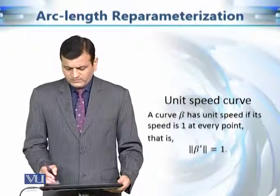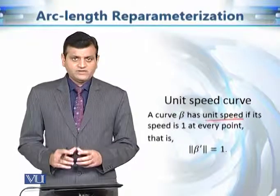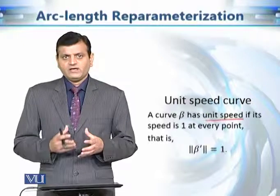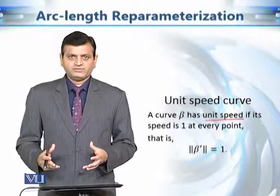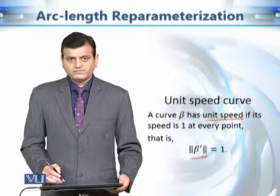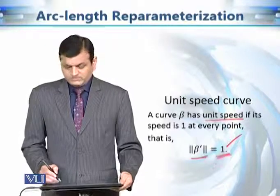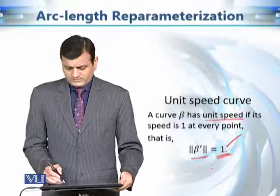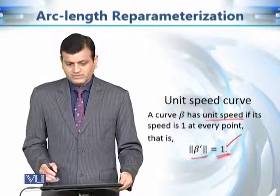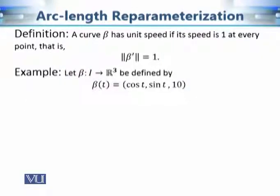This is known as arc length parameterization. Our first definition is: what is a unit speed curve? As the name suggests, it is a curve that has unit speed for every value of the parameter. In other words, the norm of beta prime of t — which is the speed of beta(t) — is always equal to 1 and is independent of t. Although beta prime depends on t, the speed is constant. Consider this particular example where beta(t) is given as (cos t, sin t, 10).